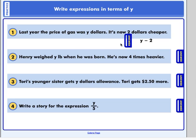Number two. Henry weighed y pounds when he was born. He's now four times heavier. Four y. Now, fifth graders, remember, this is the same as four times y. That word times was a big clue there.